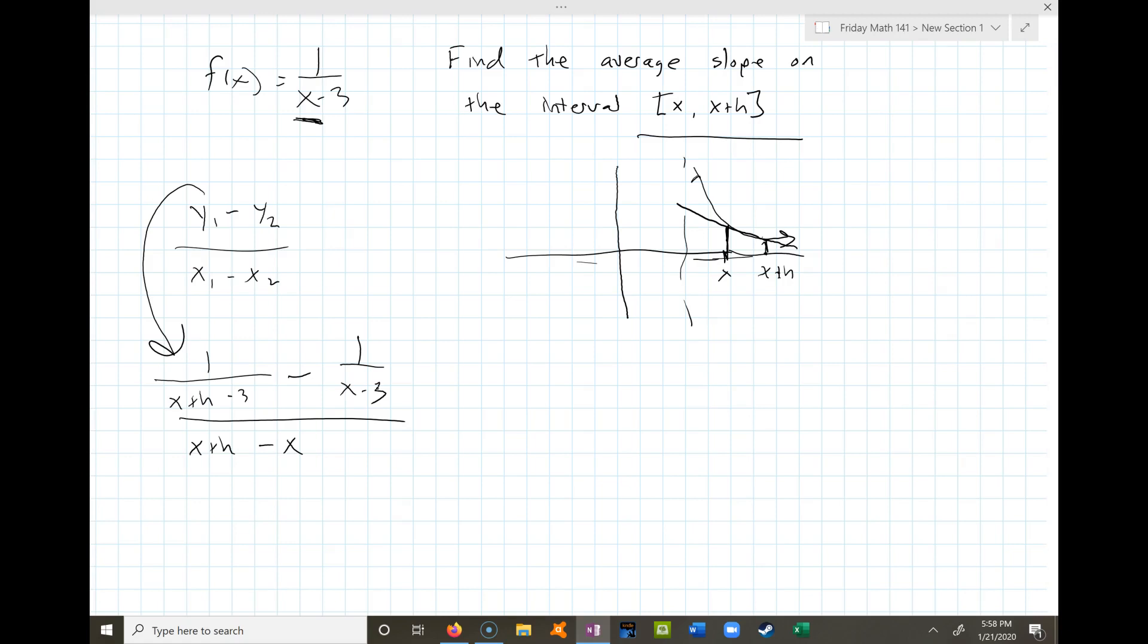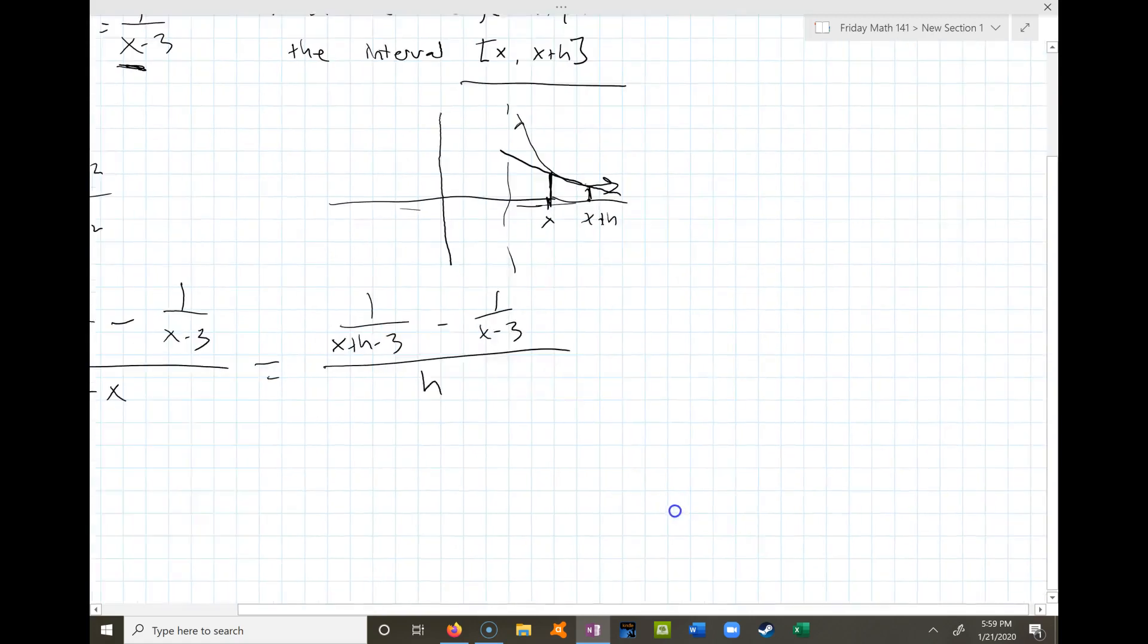My first step I would notice is that this is one over x plus h minus three minus one over x minus three. I can't really change that right now, but I am going to change the bottom. x minus x is zero, so I'll leave just an h on the bottom. And we're left with a complex fraction that the best way to simplify is to multiply top and bottom by the common denominator. The common denominator would be x plus h minus three and x minus three.